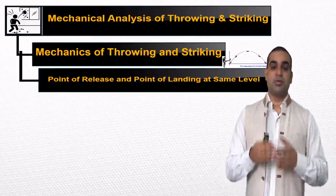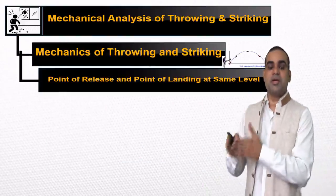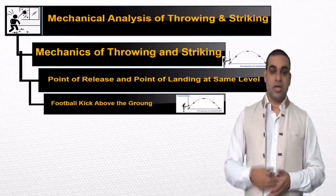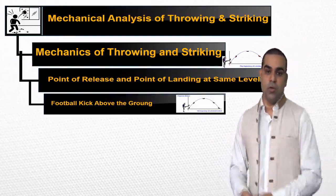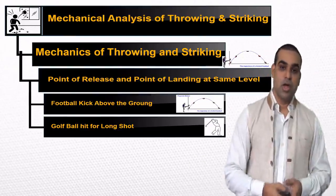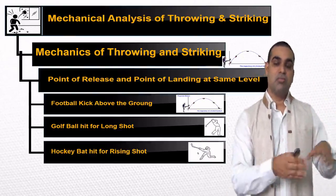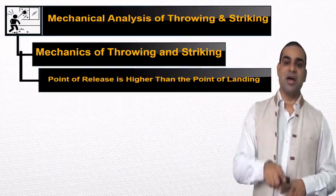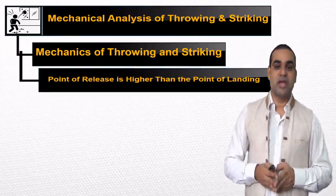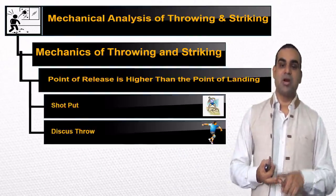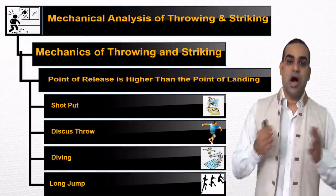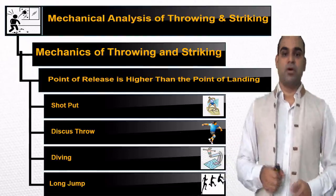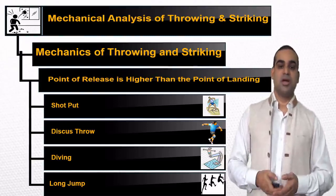The point of release and landing point at the same level — for example, kicking the football above from the ground, a ball hit for a long shot, a hockey bat hitting a rising shot, and exercises in gymnastics. The second situation — point of release higher than landing — examples include shot put, discus, hammer, diving, and even long jump. In long jump, if we use the center of gravity of the body during takeoff, it is higher, which is why we consider it.